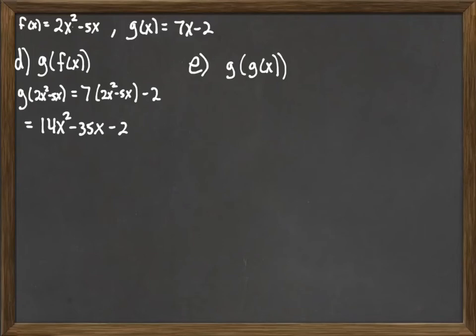So g of g. We're going to write down g with a bunch of blanks. 7 blank minus 2. And then we're going to fill in the blanks this time with g. So we're going to put 7x minus 2 into both blanks.